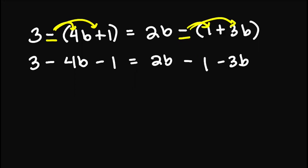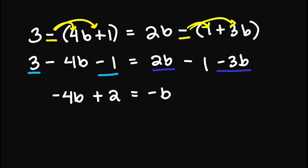From here, before we remove anything from either side, we simplify first since we have 3 and negative 1, and we have 2b and negative 3b. So using the idea of adding and subtracting polynomials, this is negative 4b and 3 minus 1 is 2. This is equal to 2b minus 3b, which is negative b, then we have minus 1 out here.